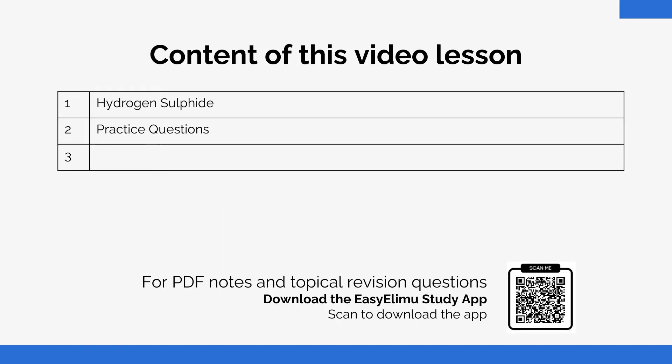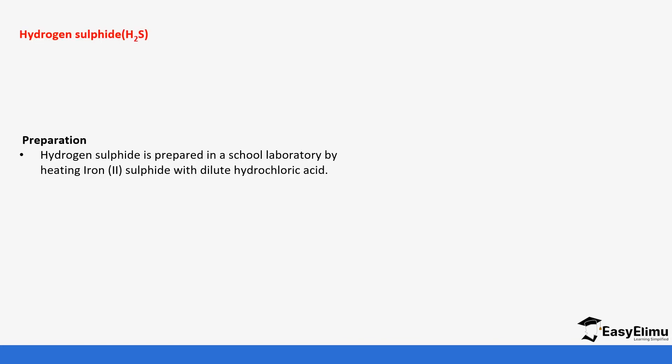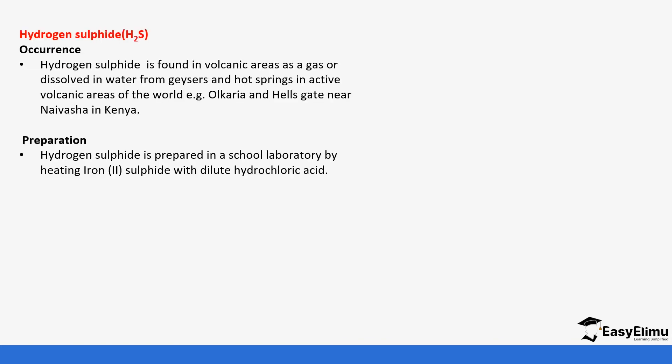Hydrogen sulfide is found in volcanic areas as gas or dissolved in water from geysers and hot springs in active volcanic areas of the world. For example, here in Kenya we get hot springs especially in Nakuru and Hell's Gate.